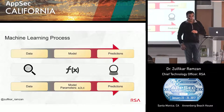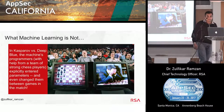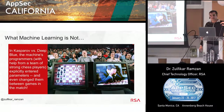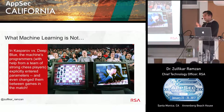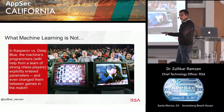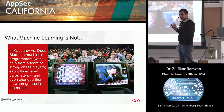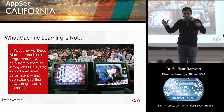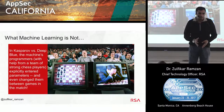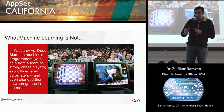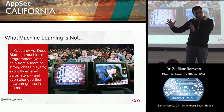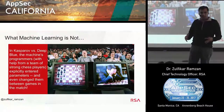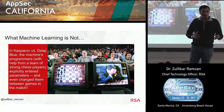I want to point out one thing about what machine learning is not, because people often confuse machine learning and artificial intelligence and use the terms interchangeably. Artificial intelligence is a broader field of which machine learning is one subset. A great example of something that was artificial intelligence but not really machine learning was the famous chess match between Garry Kasparov and Deep Blue.